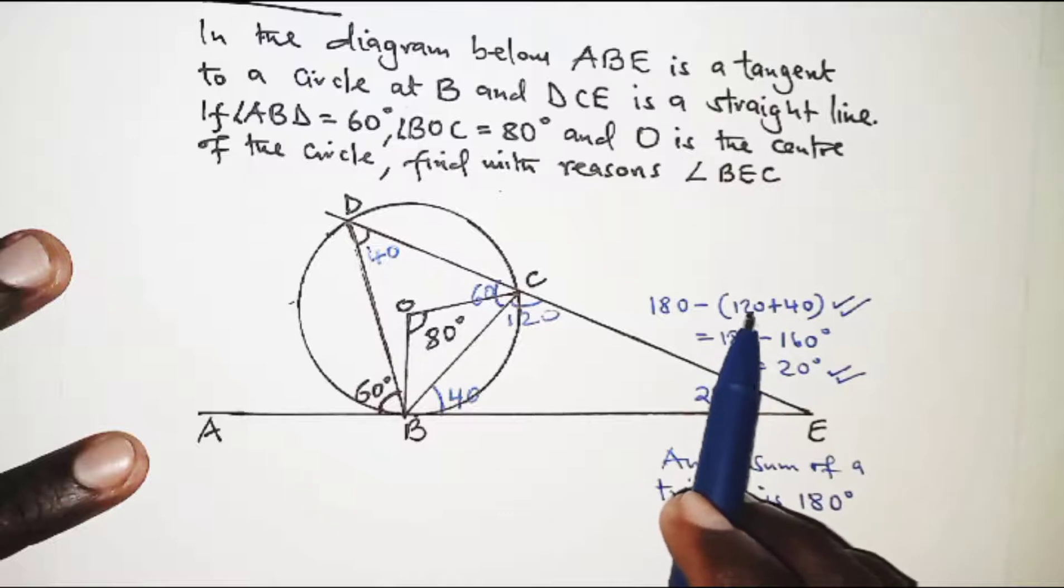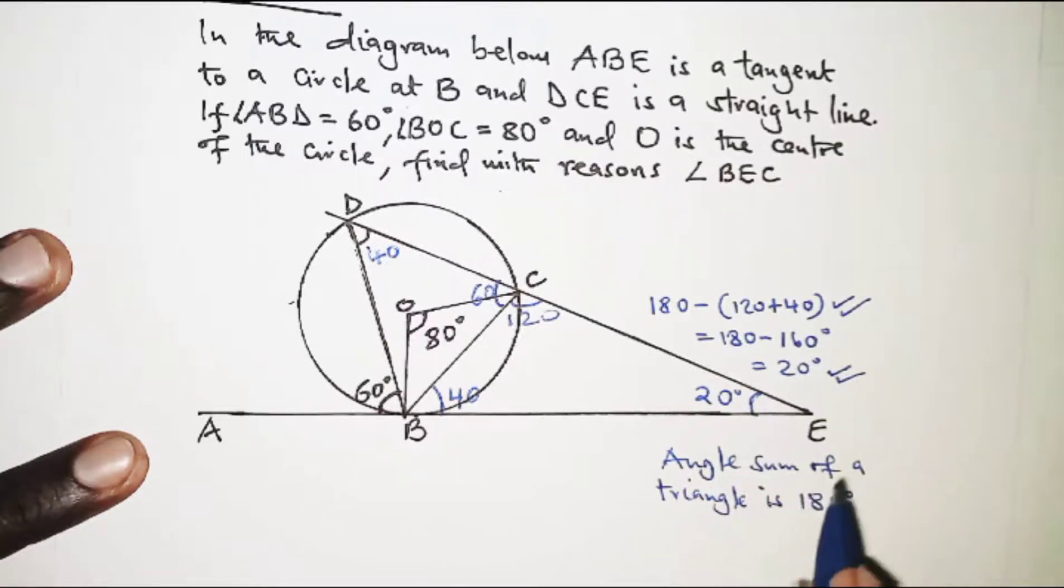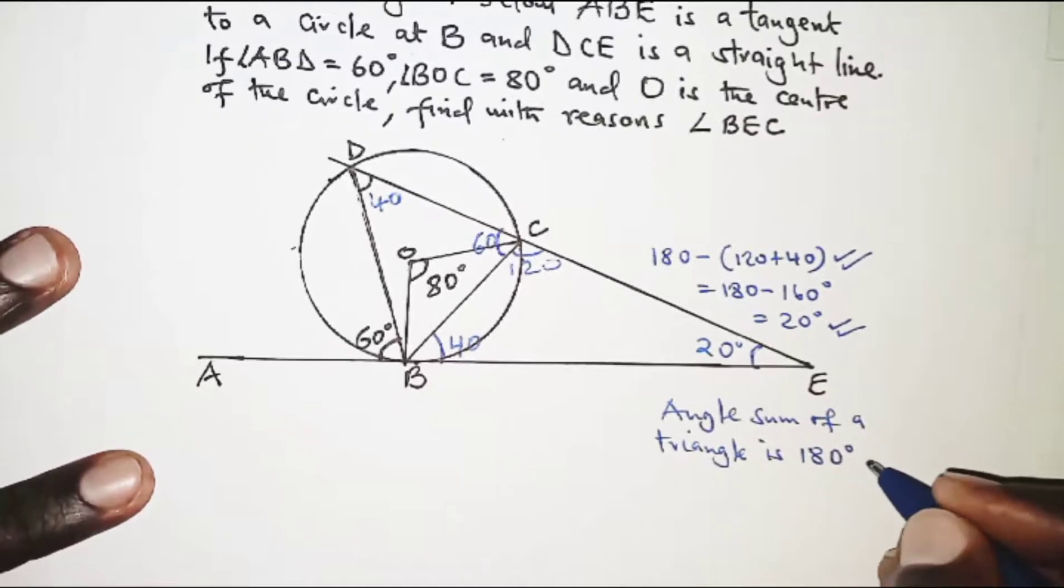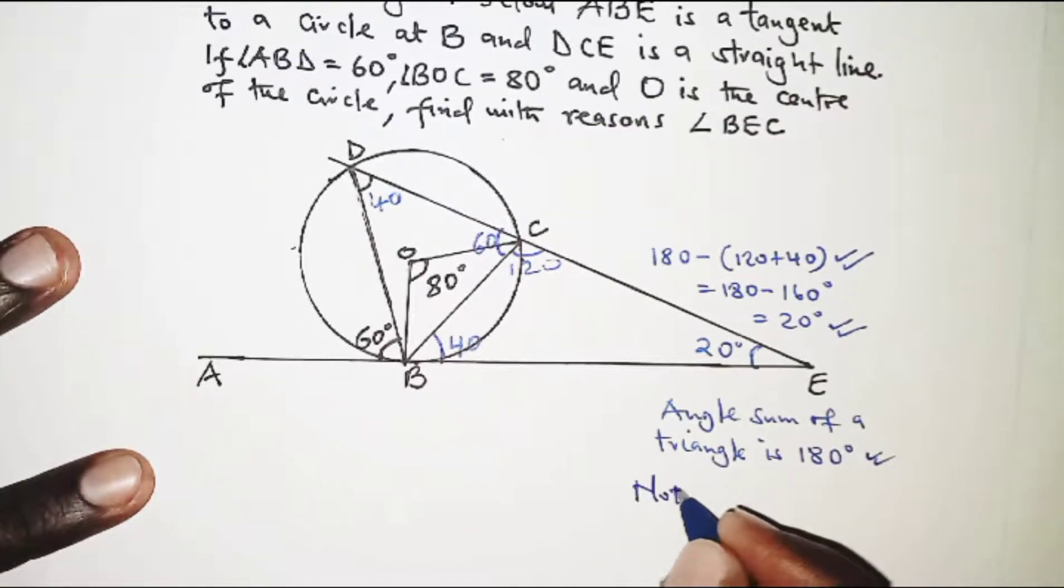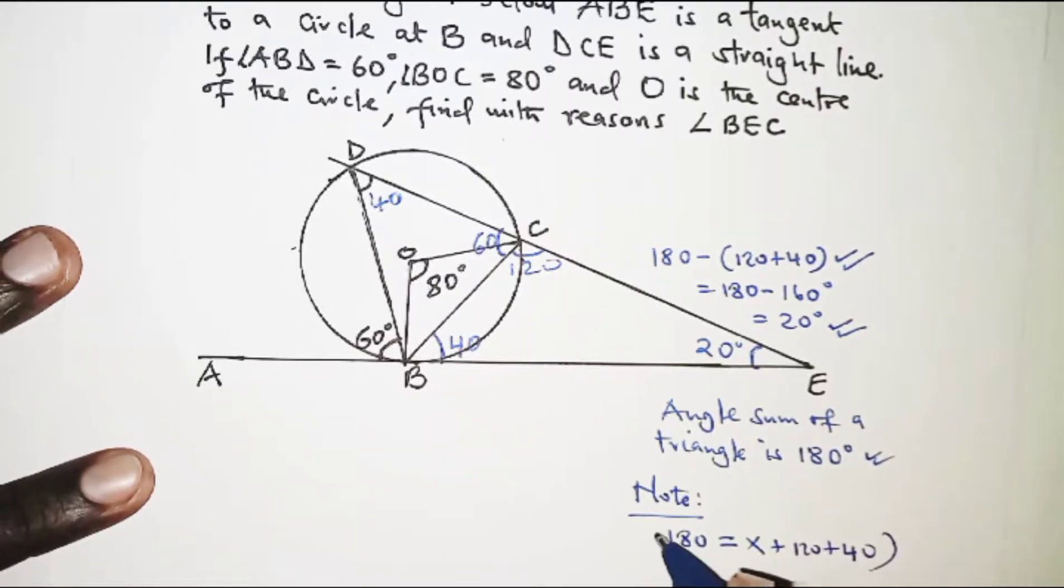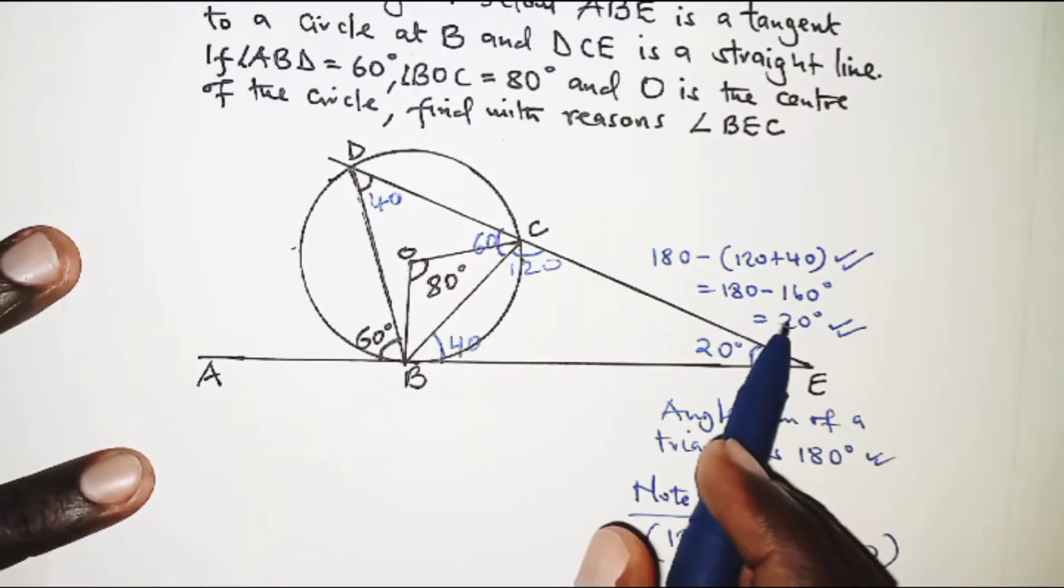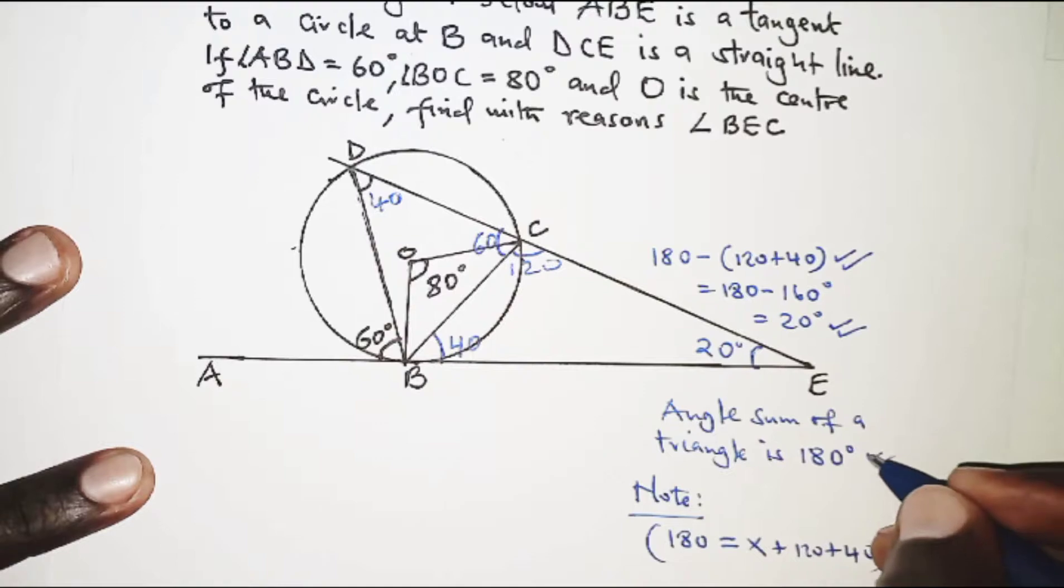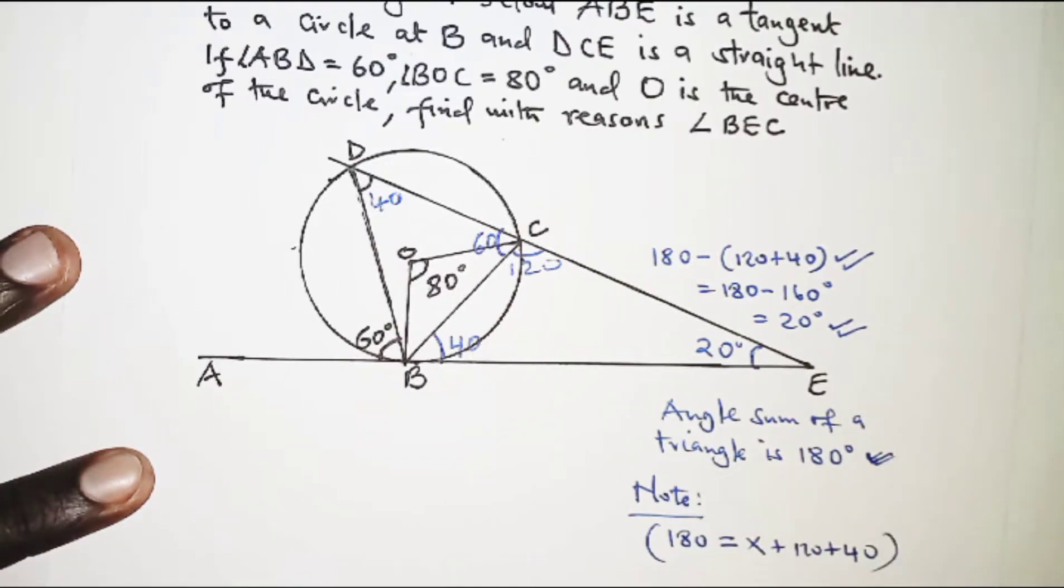We need to note 180 should be equivalent to X, which was the angle at E, plus 120 plus 40. So this is what has led to the angle 20, and we've reasoned from this property here.